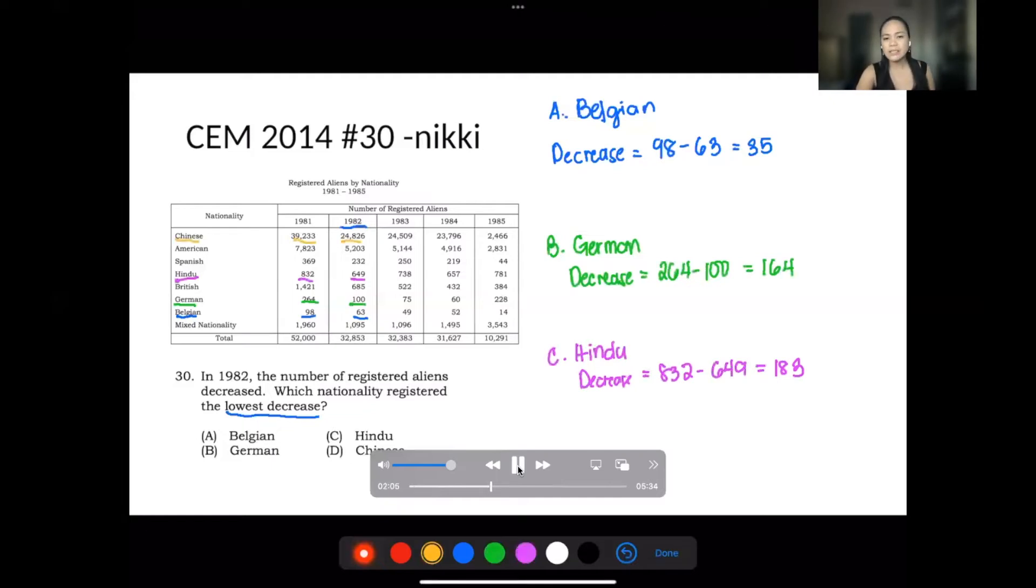And then the last one, Chinese. Let's just approximate it to 39,000. The decrease is 39,000 minus 24,000.